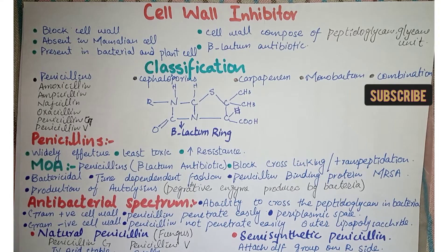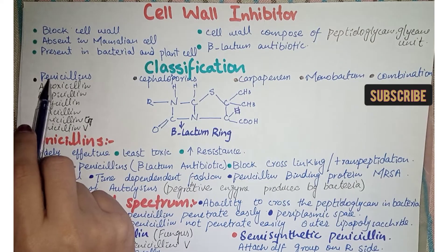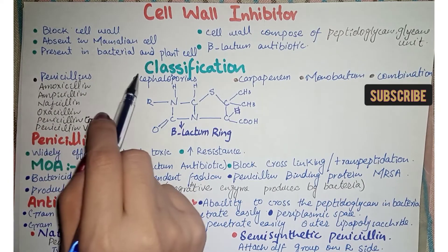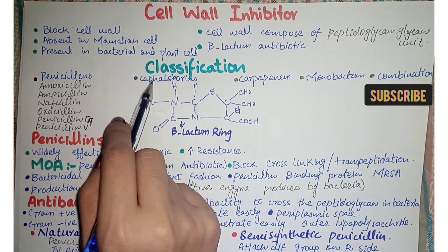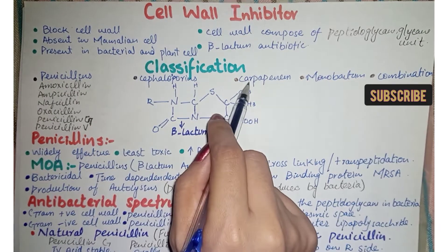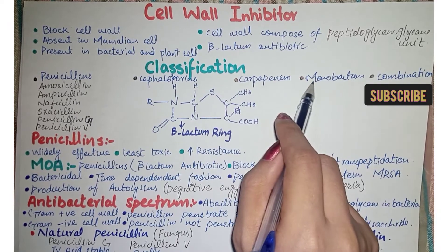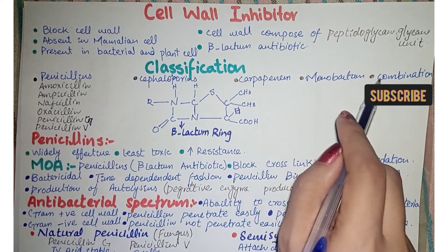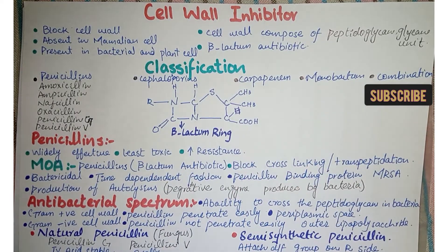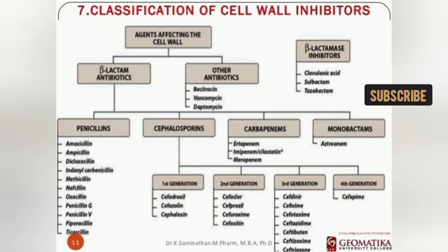Cell wall inhibitors are divided into five classifications: first is penicillins, next is cephalosporins, then carbapenems, then monobactams, and sometimes combinations. As you can see the classification of cell wall inhibitors — you need to memorize all these as they are very important from an exam point of view.